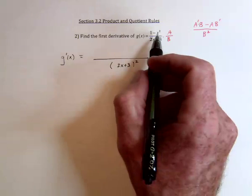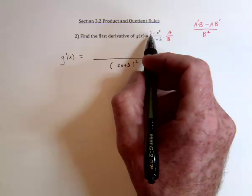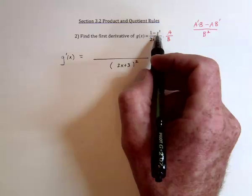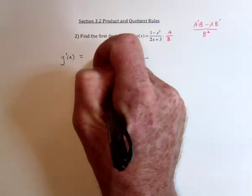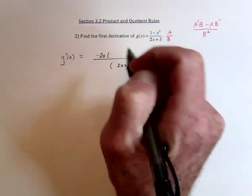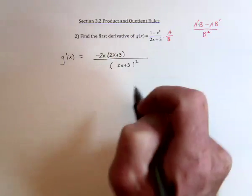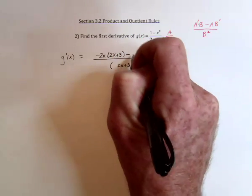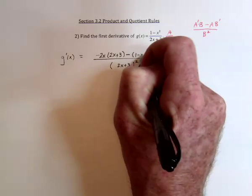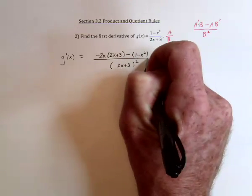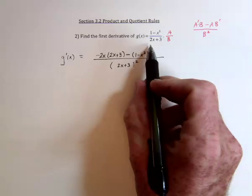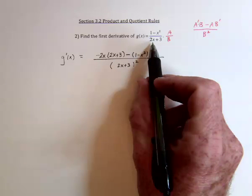Then for the numerator, take the derivative here, so the derivative of 1 is 0, the derivative of this will be negative 2x and then the denominator is left alone, and then subtract when you leave the 1 minus x squared alone and then take the derivative of this which is going to be a 2.